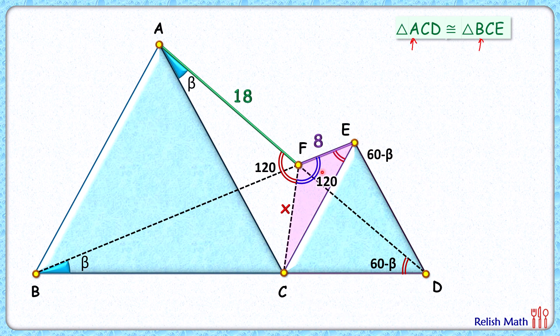Now if you consider this pink triangle here, it has one angle as 120 and a second angle as 60 minus beta. By the angle sum property, this angle here will be beta degrees. Now this pink triangle has angles beta and 120 degrees. Also, this yellow triangle AFC has two angles: beta and 120 degrees.